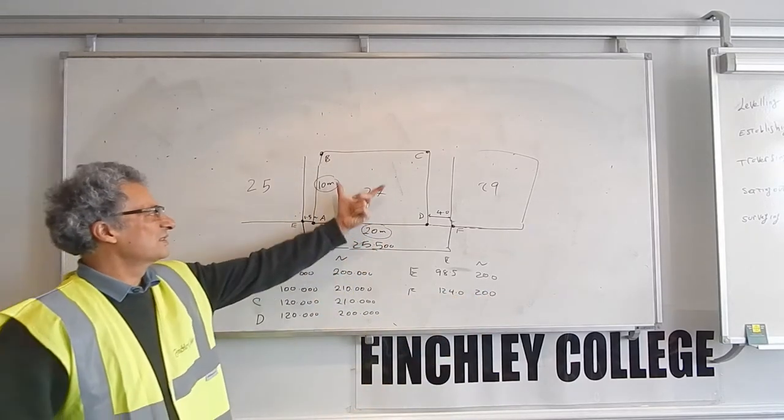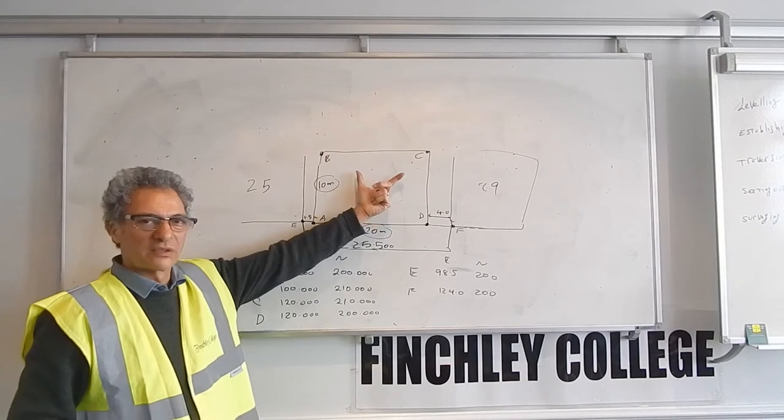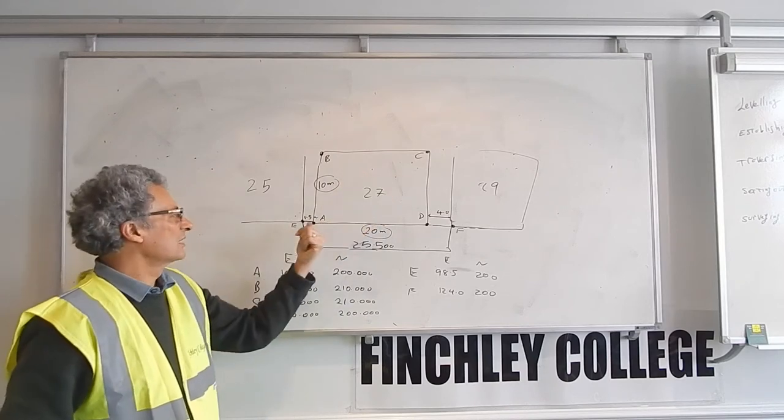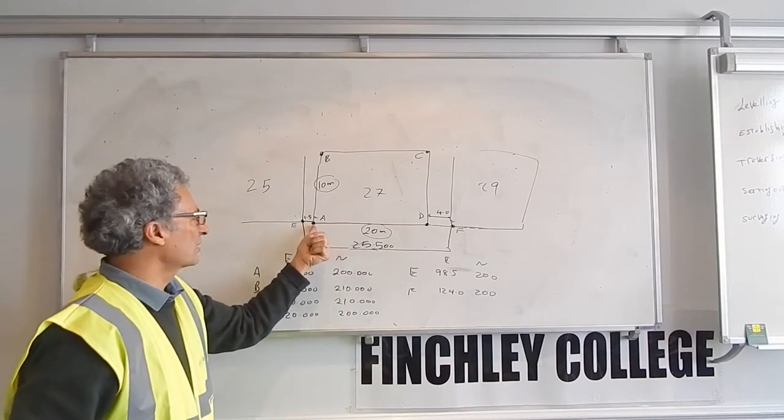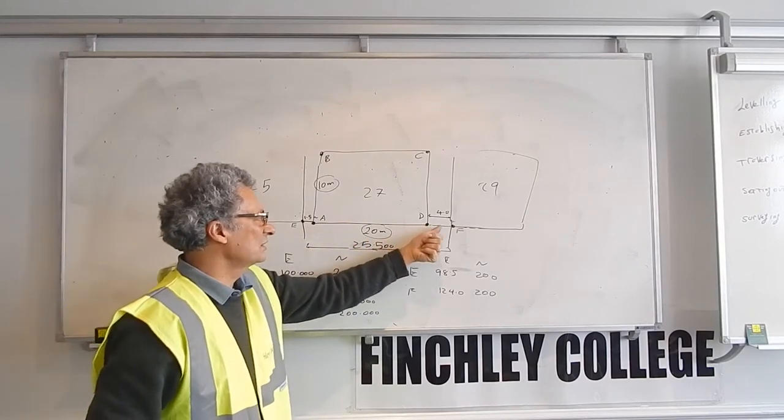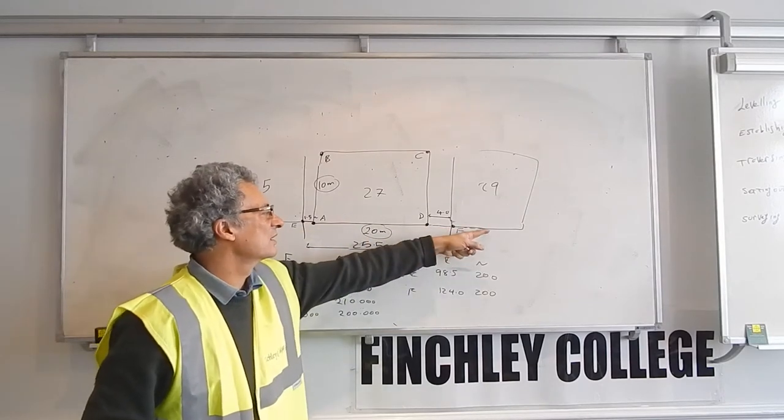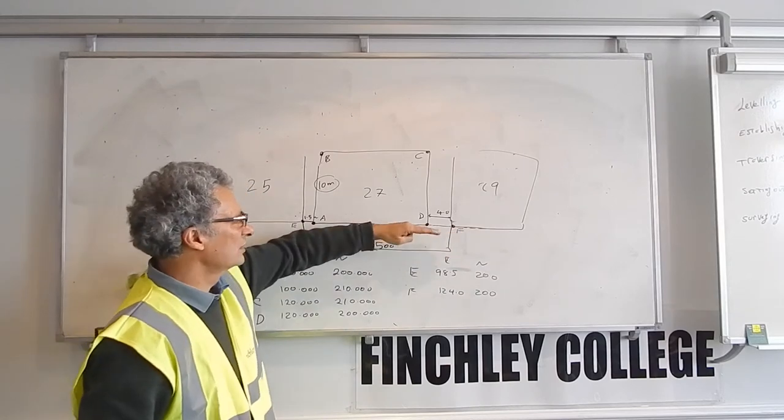So once I've decided on the coordinates for the corners of the building, I can work out the coordinates for these two, because I've already decided that's 100 plus 20, 120, plus 4, 124, and they're supposed to be in line, therefore the northing will be the same.